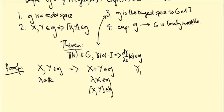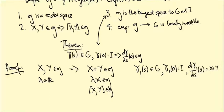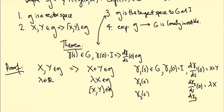We need to produce a path γ₁(s) inside G with γ₁(0) = identity and dγ₁/ds at zero equal to X+Y, then apply the theorem to conclude X+Y is in little g. Similarly, we need γ₂ with derivative λX at zero, and γ₃ with derivative [X,Y] at zero. That's the same strategy for all three parts of the theorem.